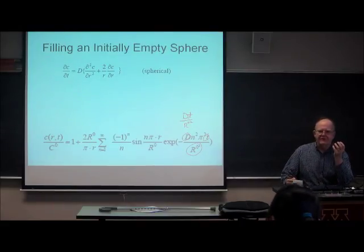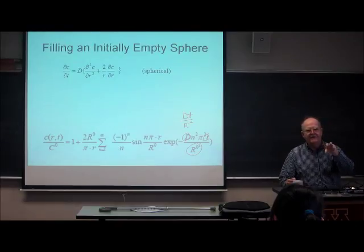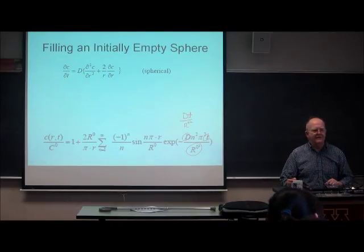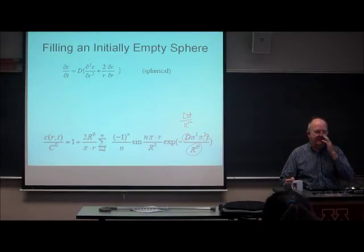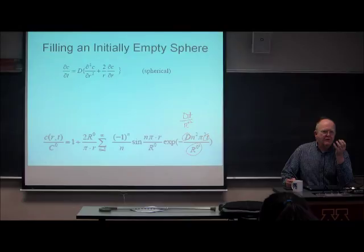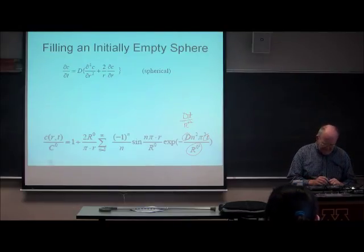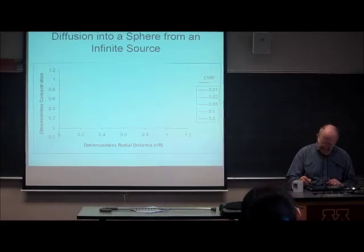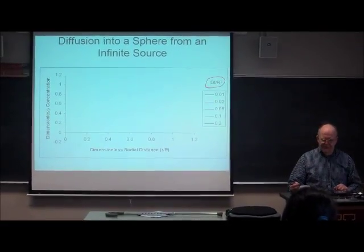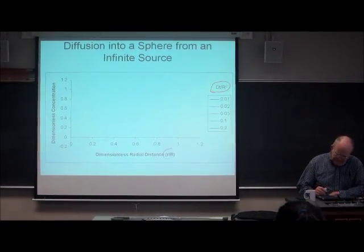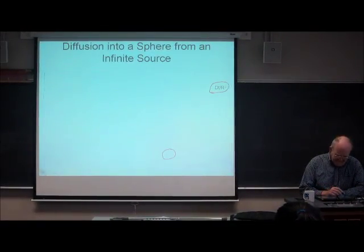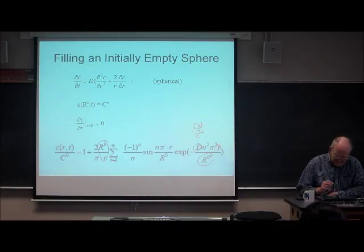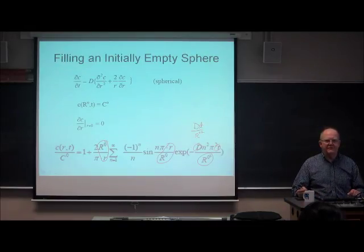Whenever you have a transcendental function — sine, cosine, inverse, hyperbolic, tangent, whatever — the argument of that function must be dimensionless. And so dp over r-naught squared is dimensionless, which is the proper quantity to give you a generalized plot. That's why I picked that to represent the time-dependent variable. The distance always shows up relative to the radius of the sphere, relative to r-naught.